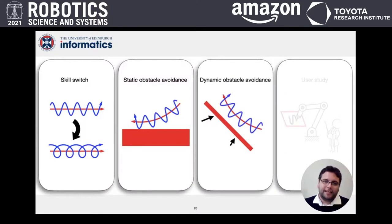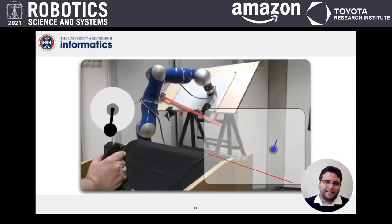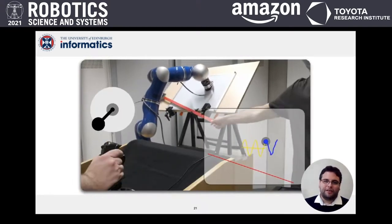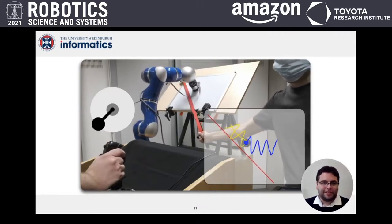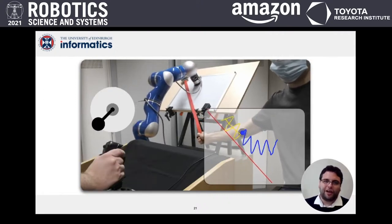Next, we look at a dynamic obstacle experiment. Due to the MPC nature of the method, by tracking obstacles and representing them as parameterized constraints, we are able to adapt signals to dynamic changes in the environment.